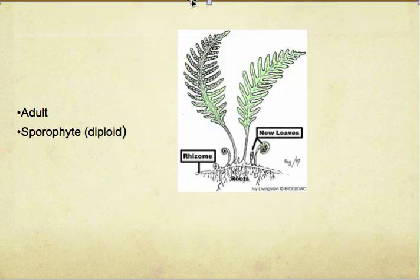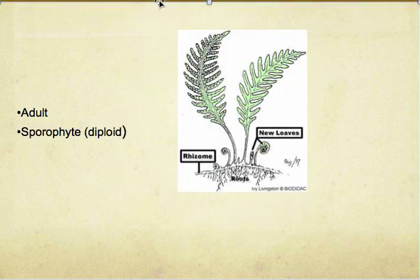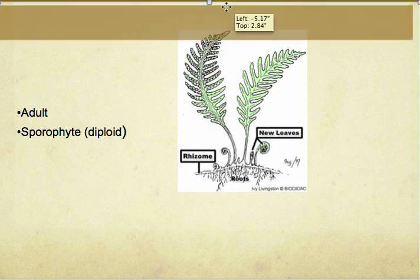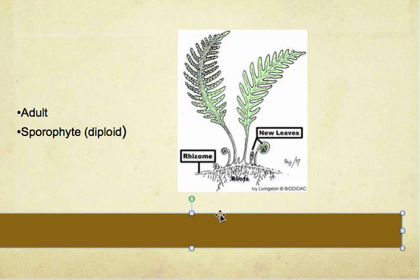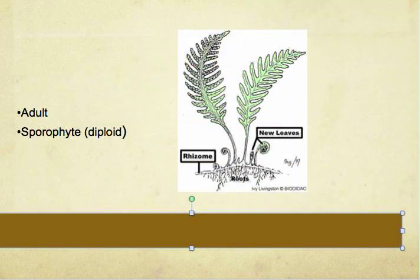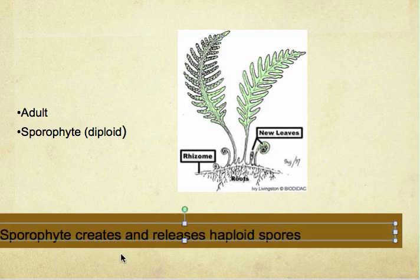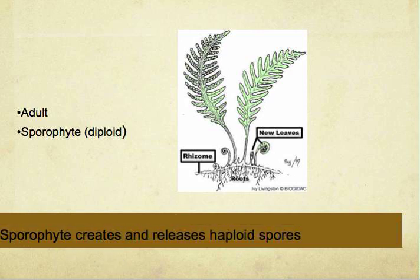The sporophyte creates and releases haploid spores. Now, as an adult, it is diploid. This is a summary section. I forgot to put the diagram here because I couldn't find it, but you should be able to get the diagram from the textbook. The spores land in the soil.